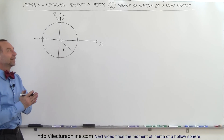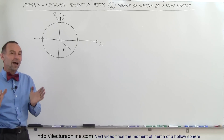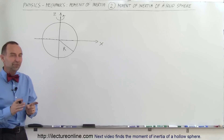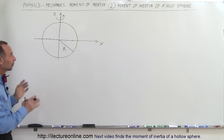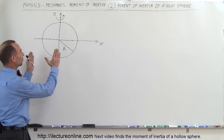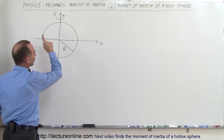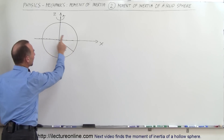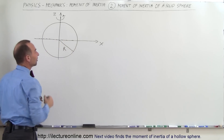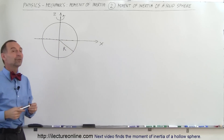Welcome to ElectronLine. In this example we're going to show you how to find the moment of inertia of a solid sphere. Here we have a solid sphere of radius R rotating about its center of mass, and we're trying to determine the moment of inertia.